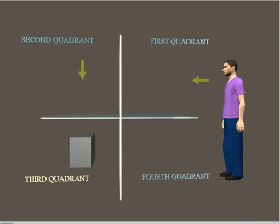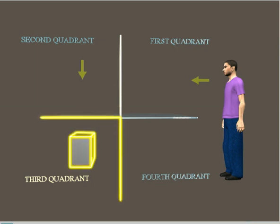In this quadrant, the object is placed below the horizontal plane and behind the vertical plane.